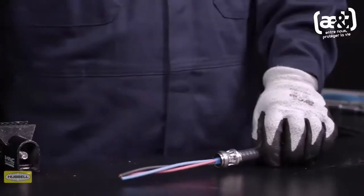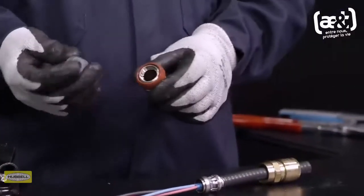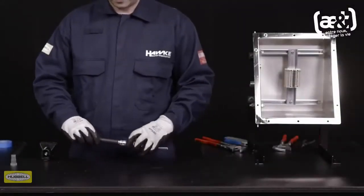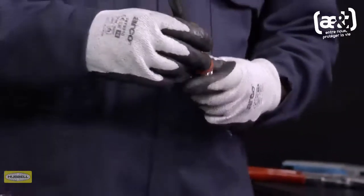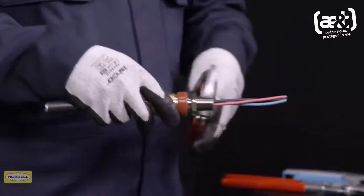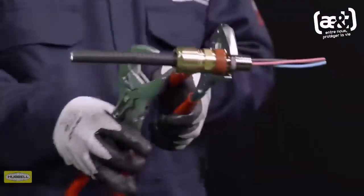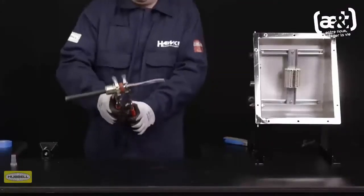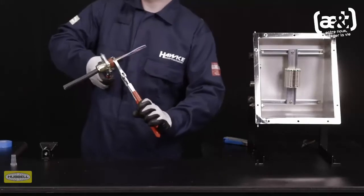Remove the tape. Ensure that the compound pot is removed from the assembly. Slide the entry over the cable. Ensuring that the Diablo stays in place, tighten the middle nut onto the entry with a wrench until the Diablo grips the metal clad sheath. Tighten the middle nut a further half turn with a wrench.